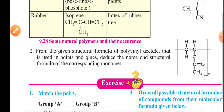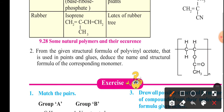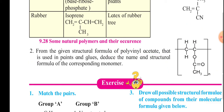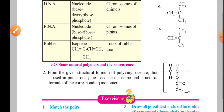Further, an example is given about polyvinyl acetate, which is used in paints and glues — here you are asked to deduce the name and structural formula of the corresponding monomer. This is all about Chapter 9, Carbon Compounds.